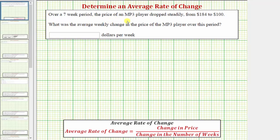Over a seven week period, the price of an MP3 player dropped steadily from $184 to $100. What was the average weekly change in price of the MP3 player over this period?